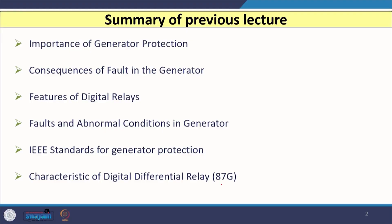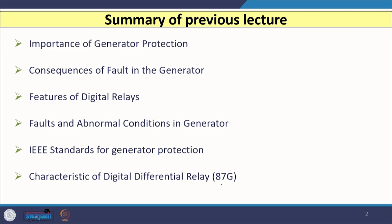In the previous lecture, we discussed the importance of generator protection and the consequences when a fault persists for a longer period in a synchronous generator — specifically, how the stator, rotor, or generator winding gets damaged. To avoid that, digital relays are widely used, covering features from overcurrent to differential, earth fault, overvoltage, undervoltage, over frequency, and under frequency. We also discussed possible fault types and abnormal conditions occurring in the synchronous generator.